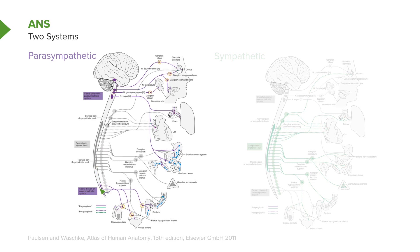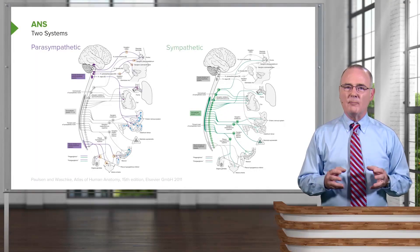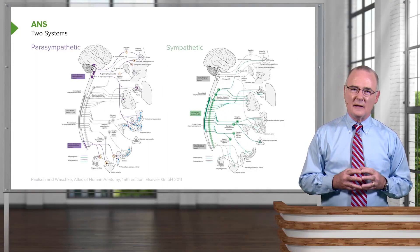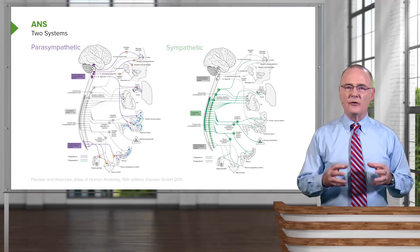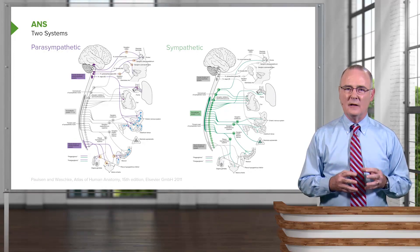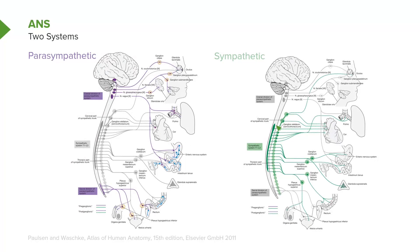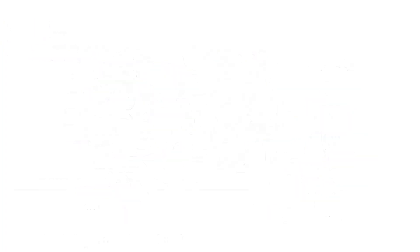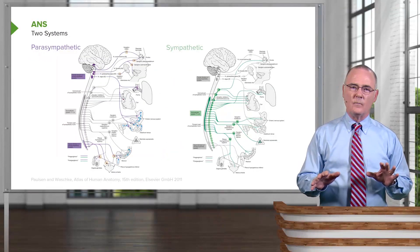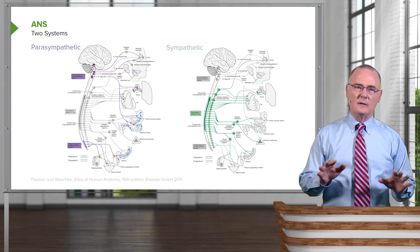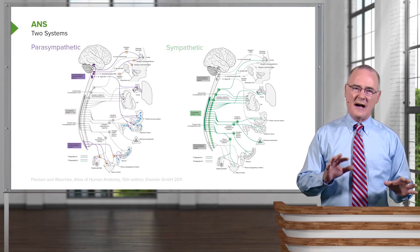In the spinal cord area, the sacral area, you also have contributions to this parasympathetic system. The other system is the sympathetic system, and the components of this system are shown in green. You see the centrally located components of the sympathetic system in the spinal cord, and then you see the peripheral distribution to viscera, for example.